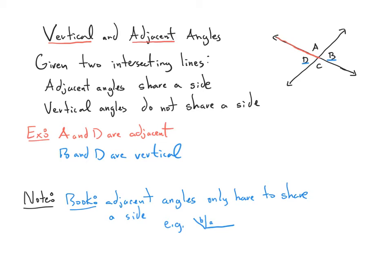A quick note: in the book, there are a few problems that talk about adjacent angles. The book calls any two angles that share a side adjacent. Here we have angles that don't come from the intersection of just two lines — there are kind of three lines involved. In our purpose, we won't call them adjacent, but if there are problems in the book that deal with adjacent angles, they count these as adjacent as well.